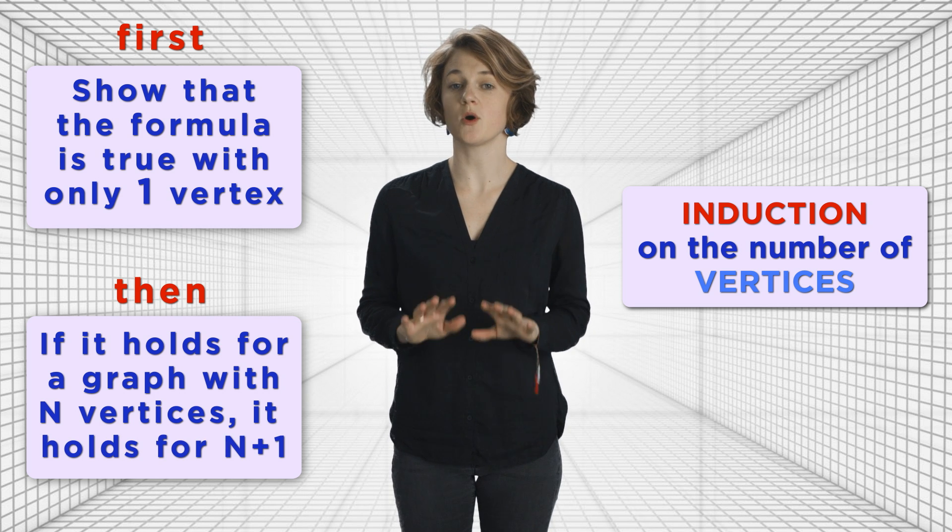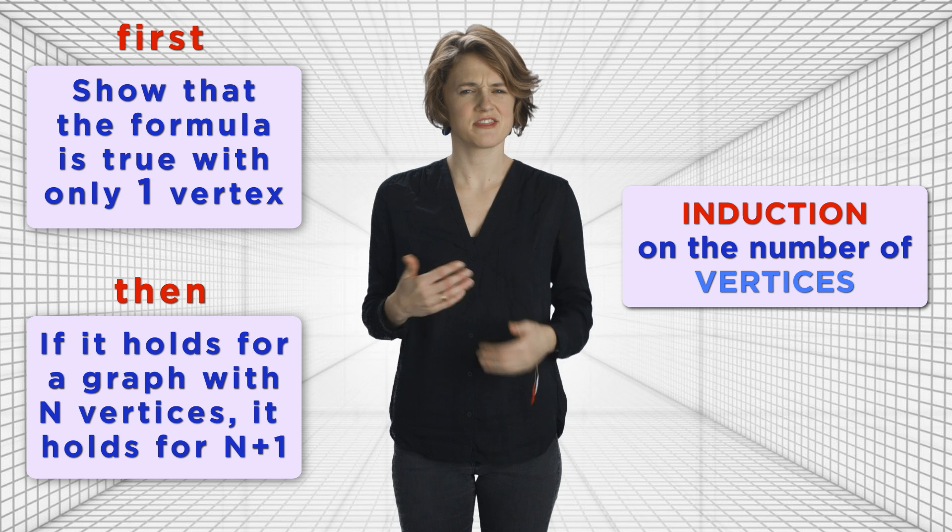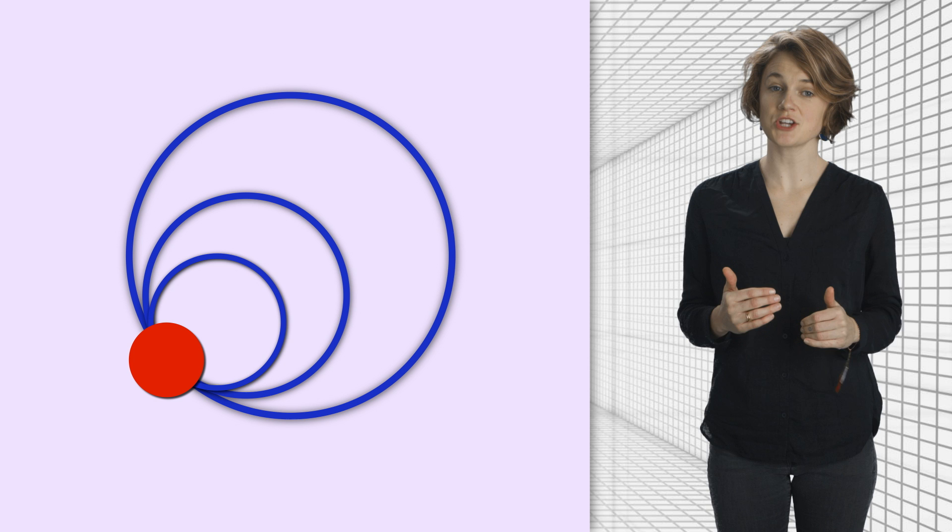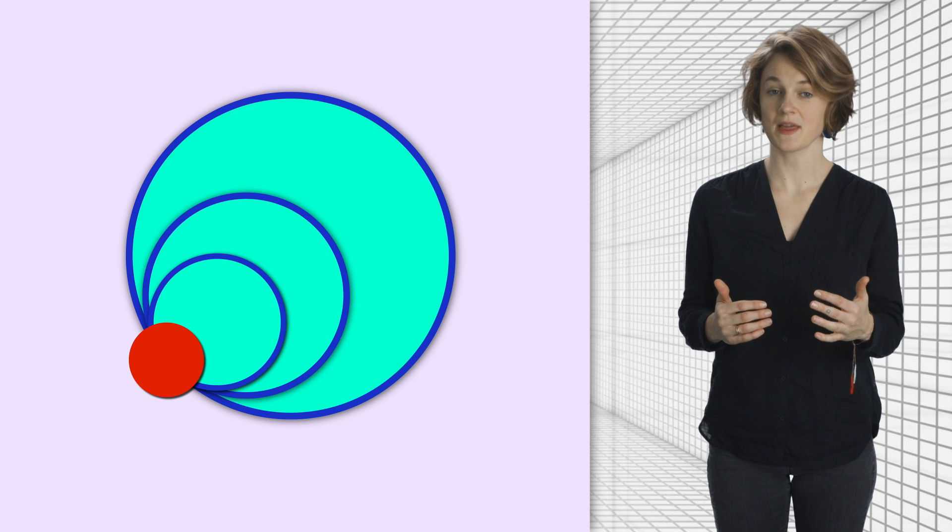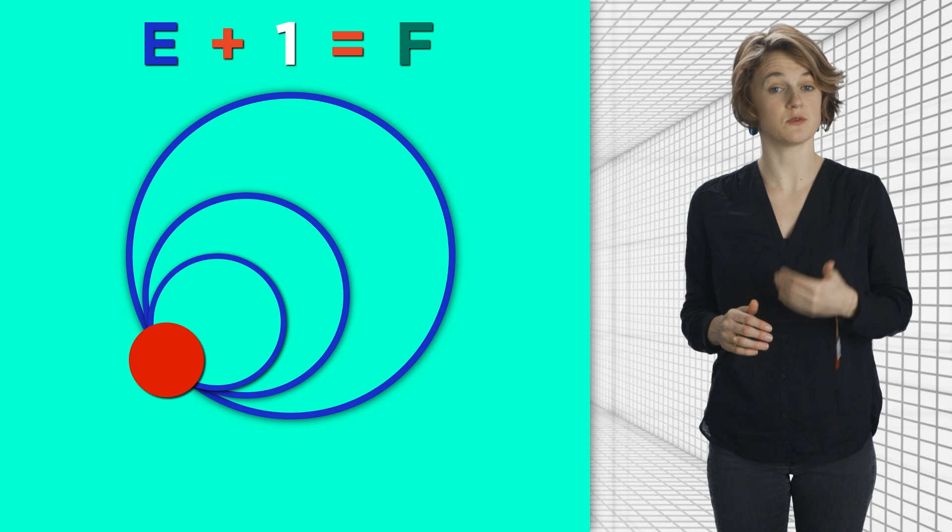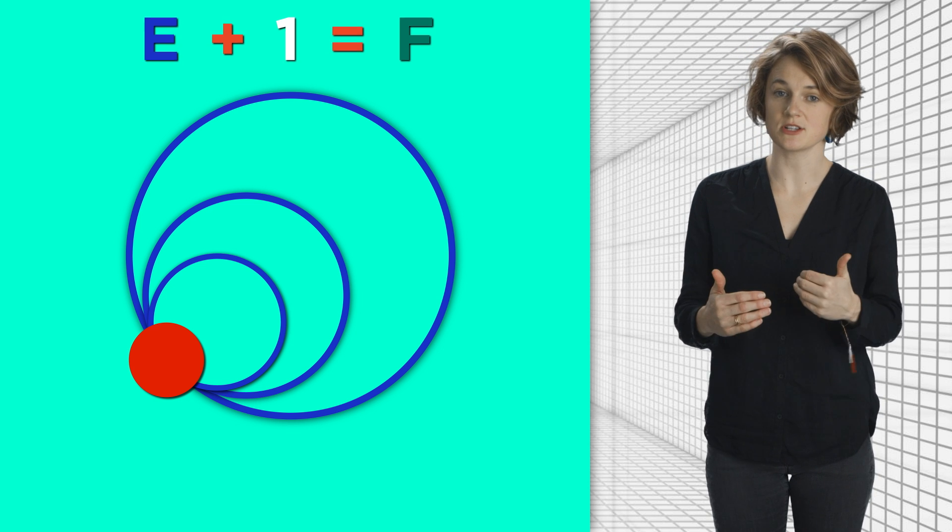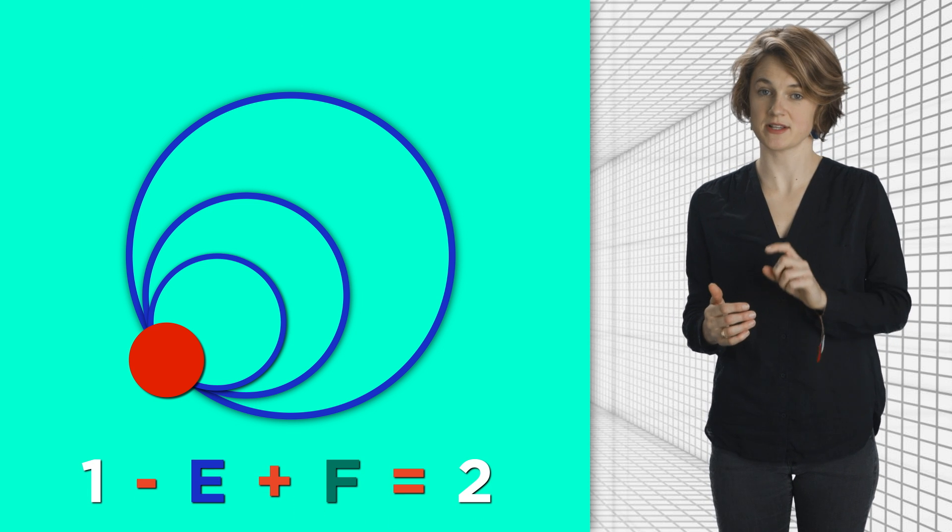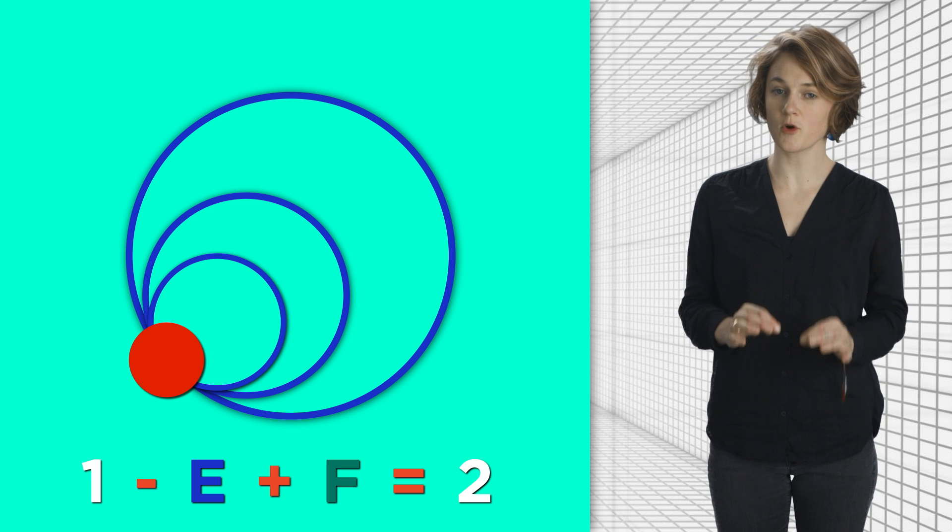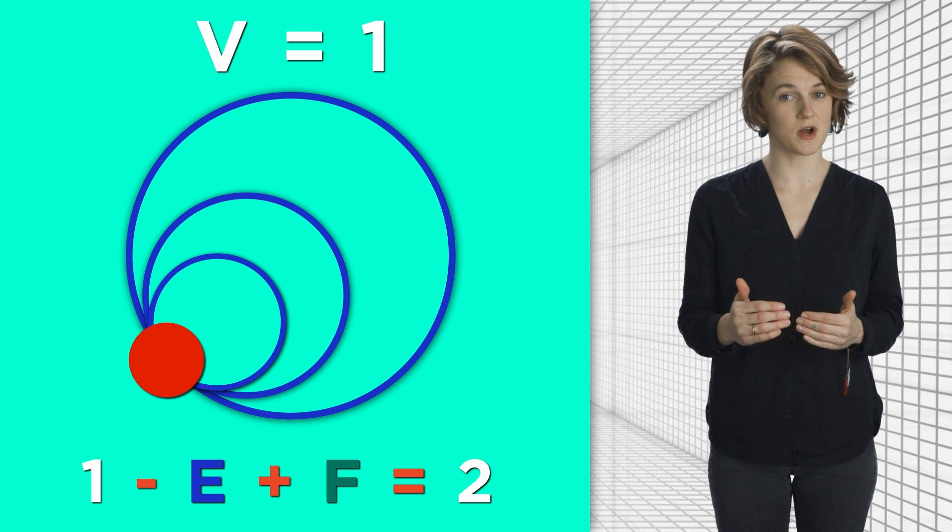Assume the graph only has one vertex. Then it must look something like this. All the edges are loops. Each edge creates a new face, and there's an outside face. So E plus 1 equals F, which rearranges to 1 minus E plus F equals 2, which is the Euler characteristic formula for V equals 1.